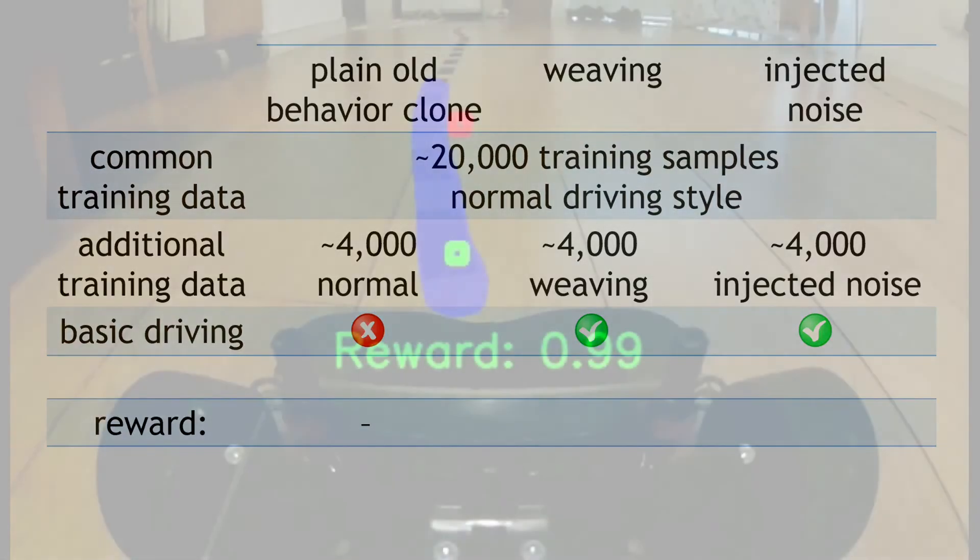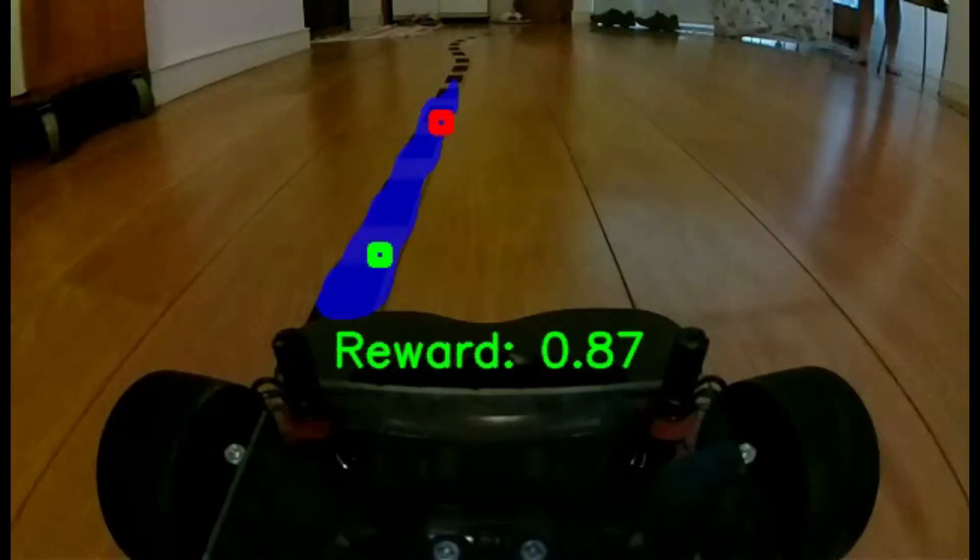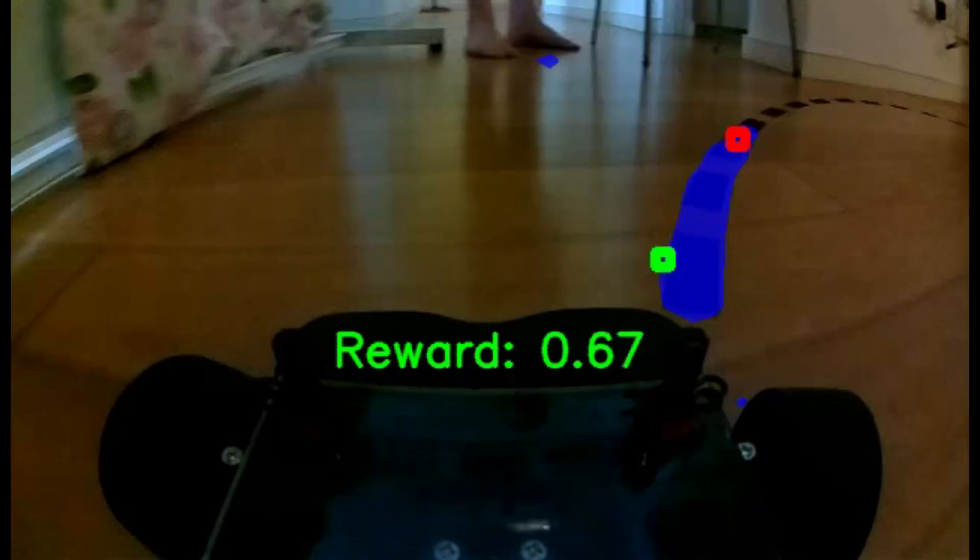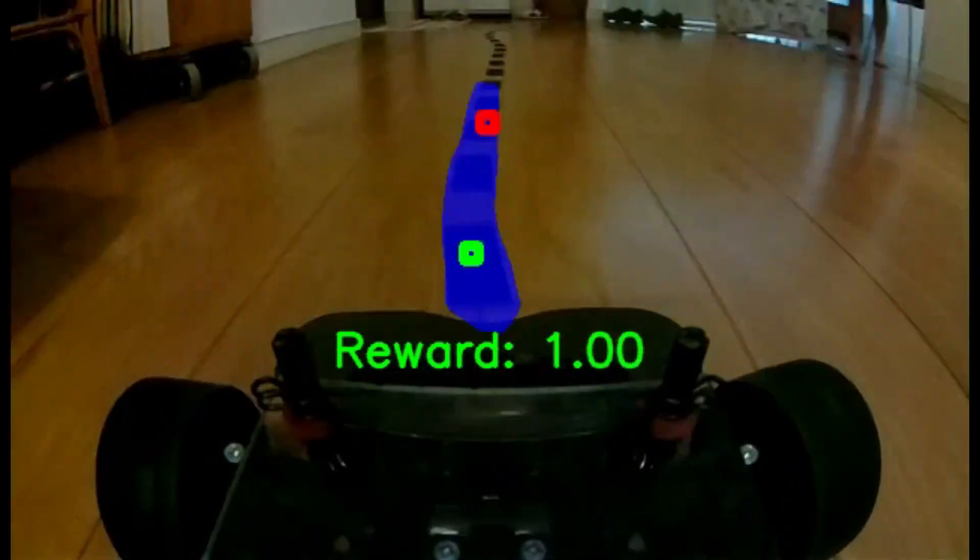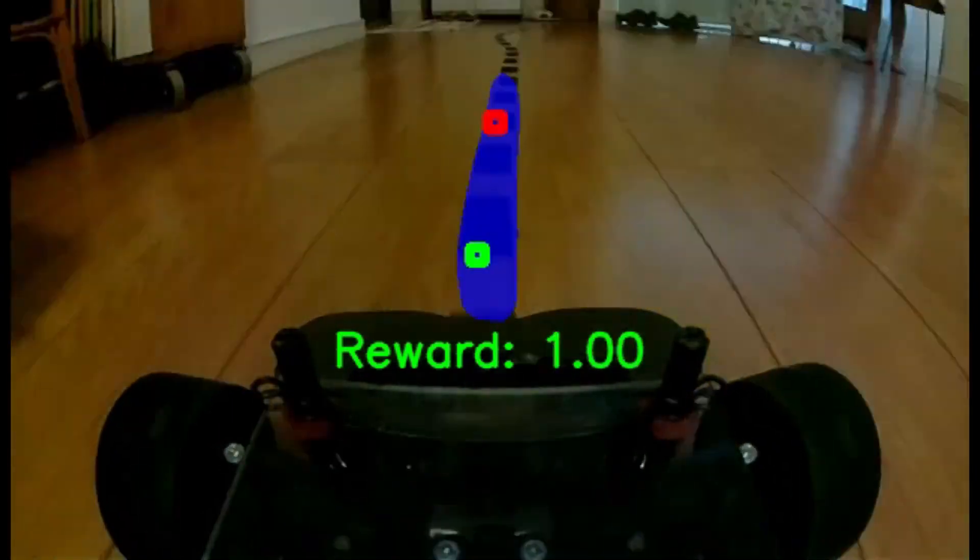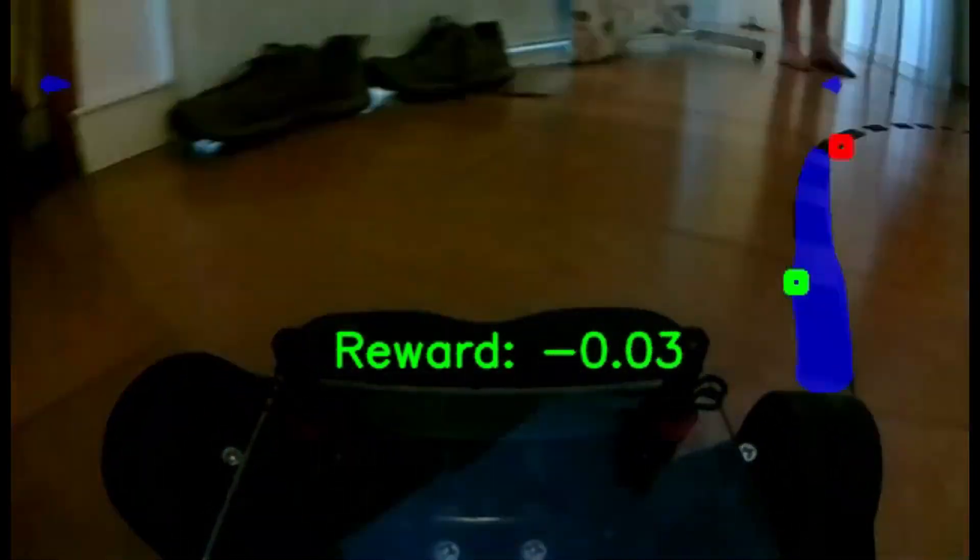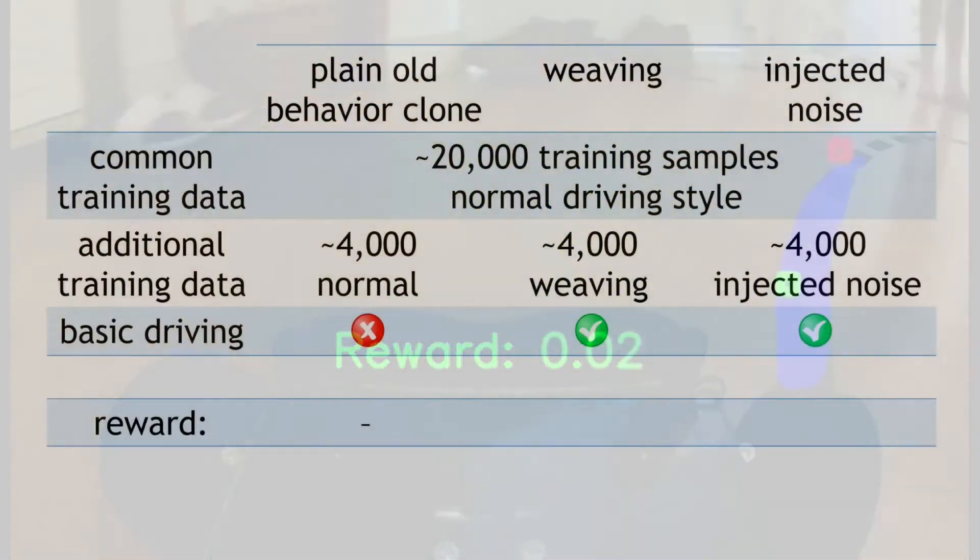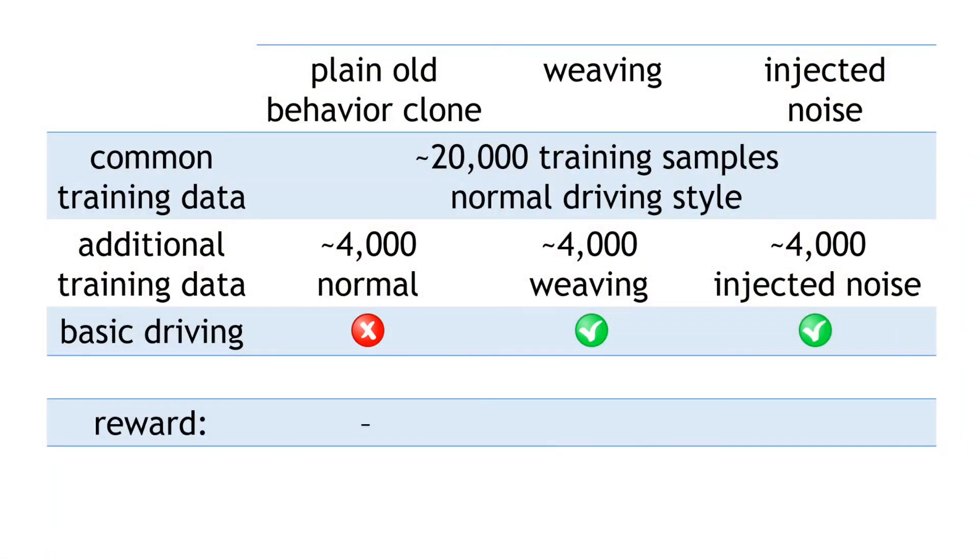Overall, there were about five laps in either direction. So when we add up all of these individual rewards and calculate the average, the weaving trained policy came up with an average reward of around 0.78 per image.